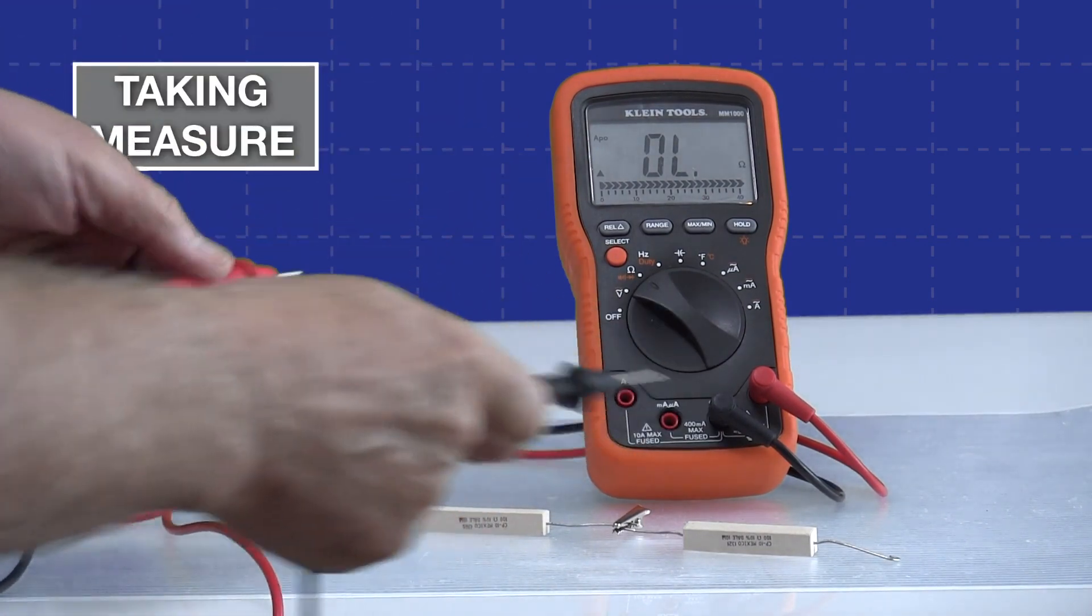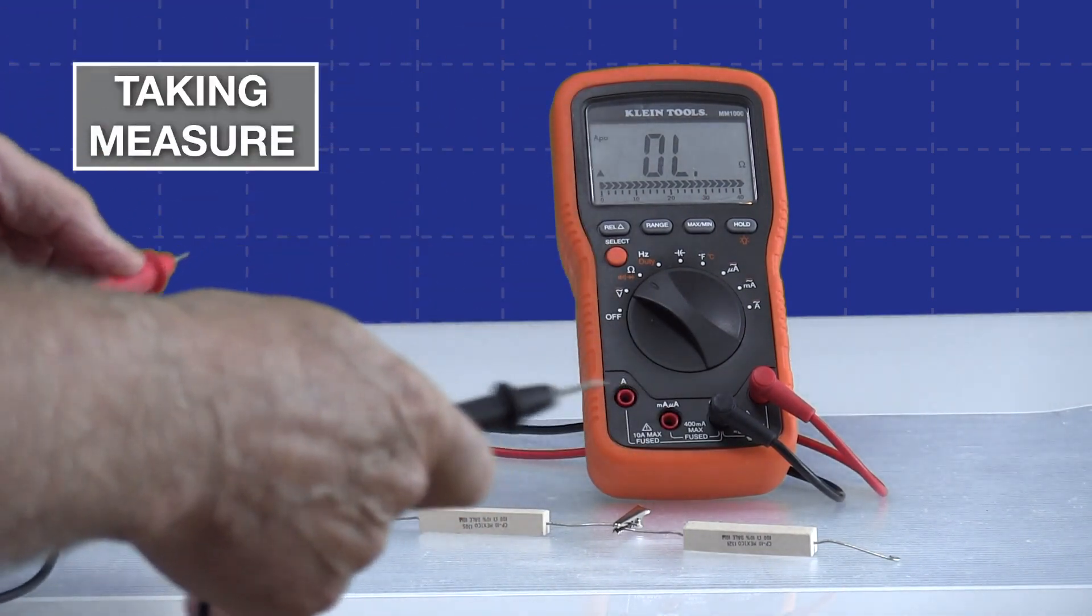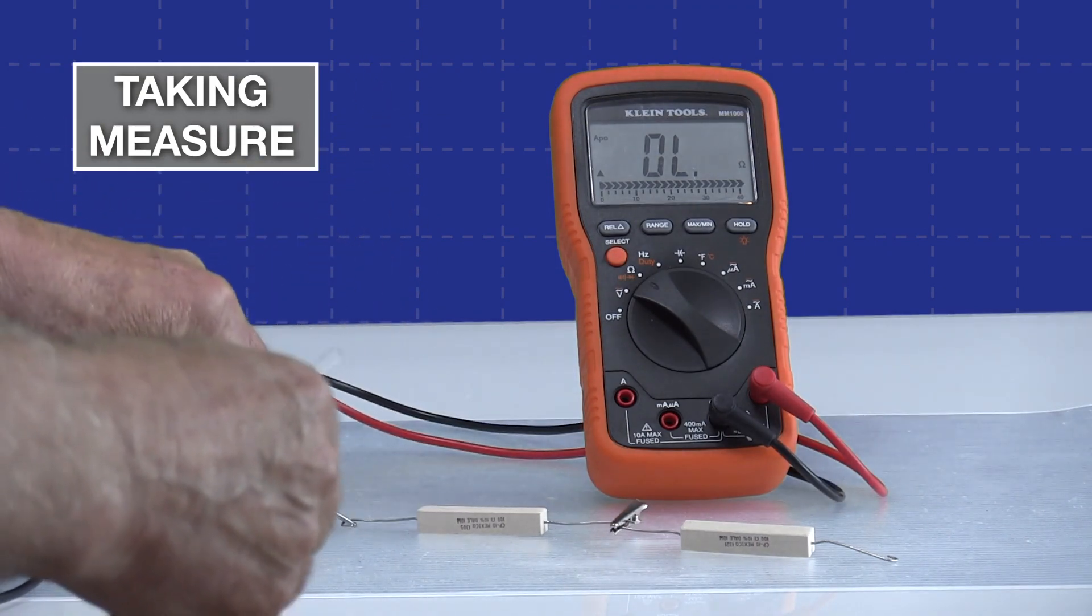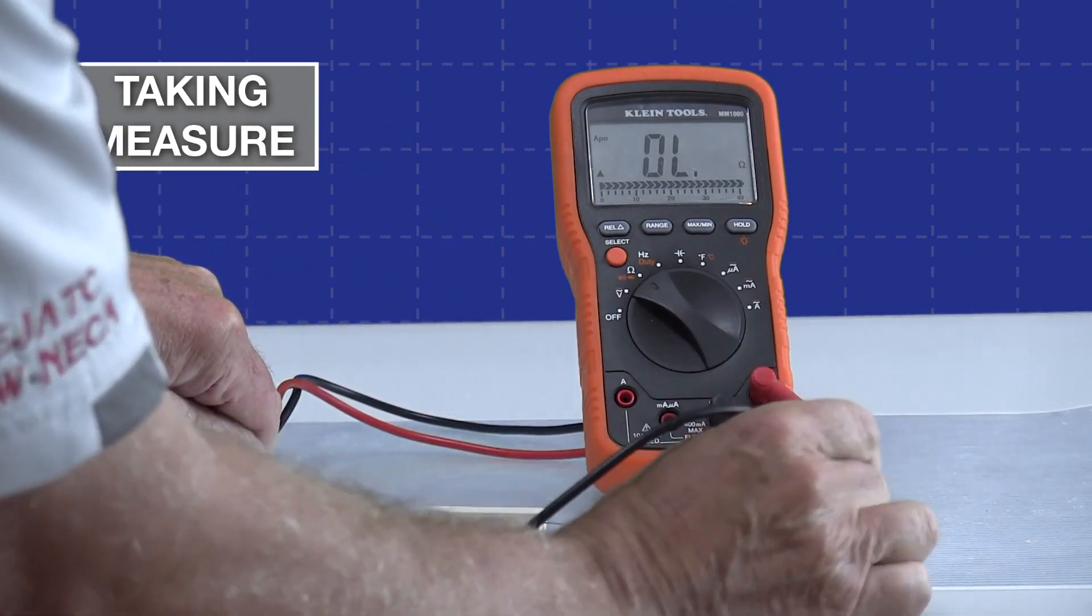And when I take my next measurement, I'm going to do the series measurement of the two resistors. It will basically blank out that first resistance and not see it anymore. It made it go away basically. It kind of blanks it out.